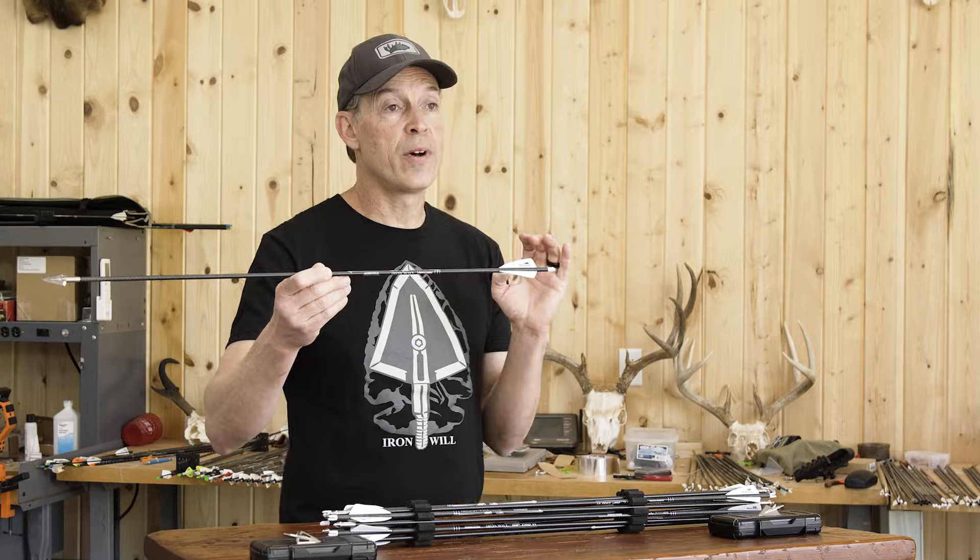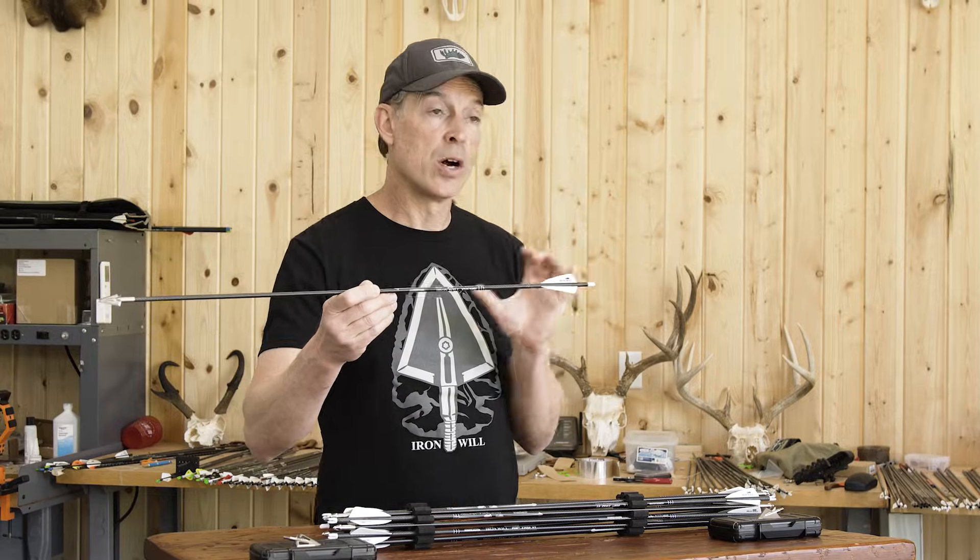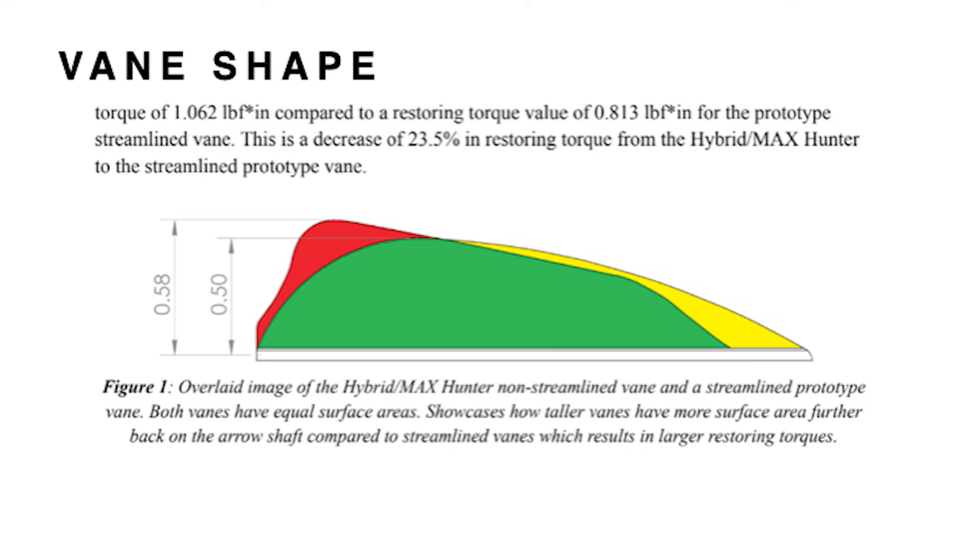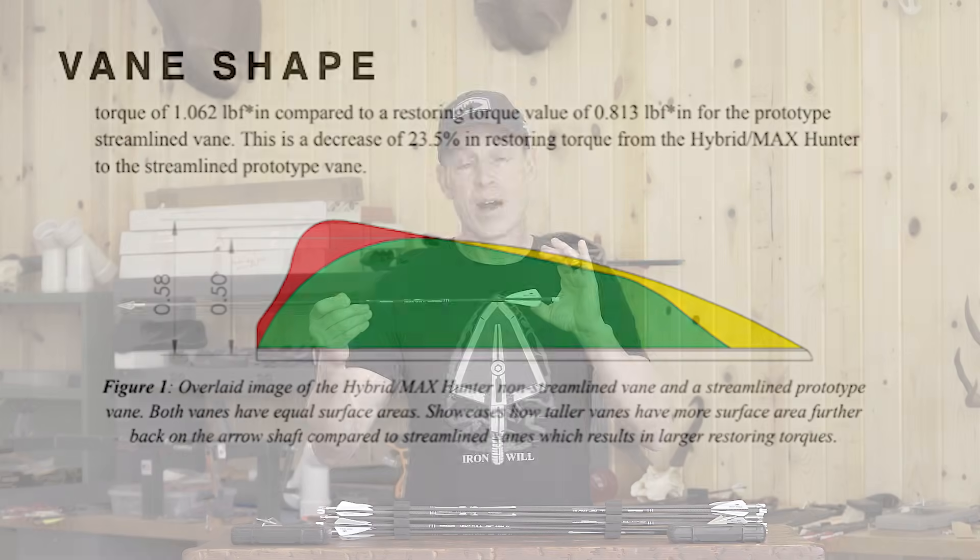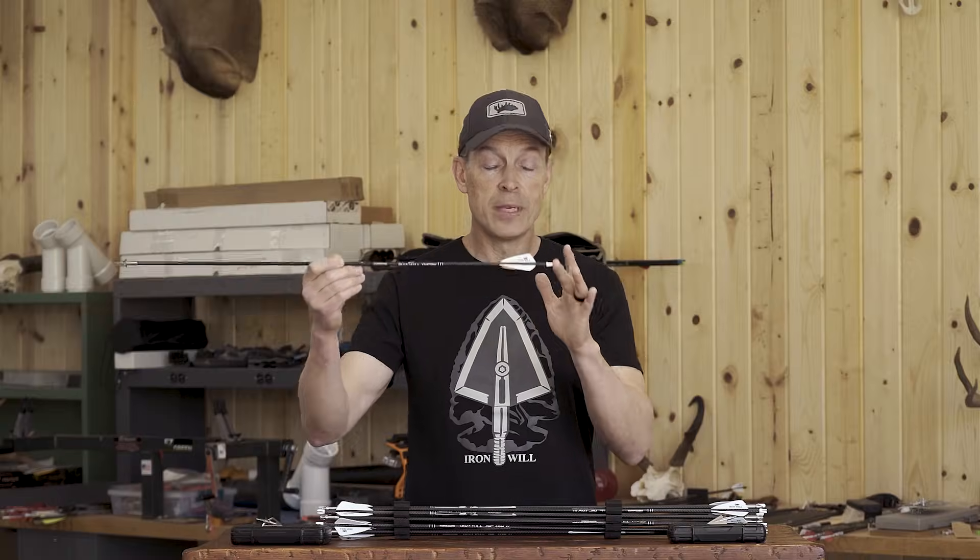In general, the shorter two-inch higher profile vanes are louder than the longer, shorter vanes. But we also found that by having a longer lead in the front, you can have a high profile vane but still have it be very quiet.